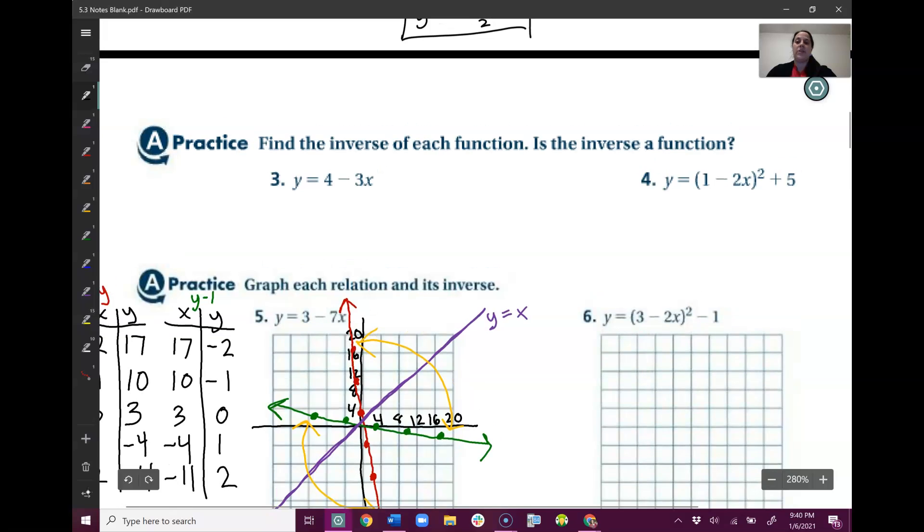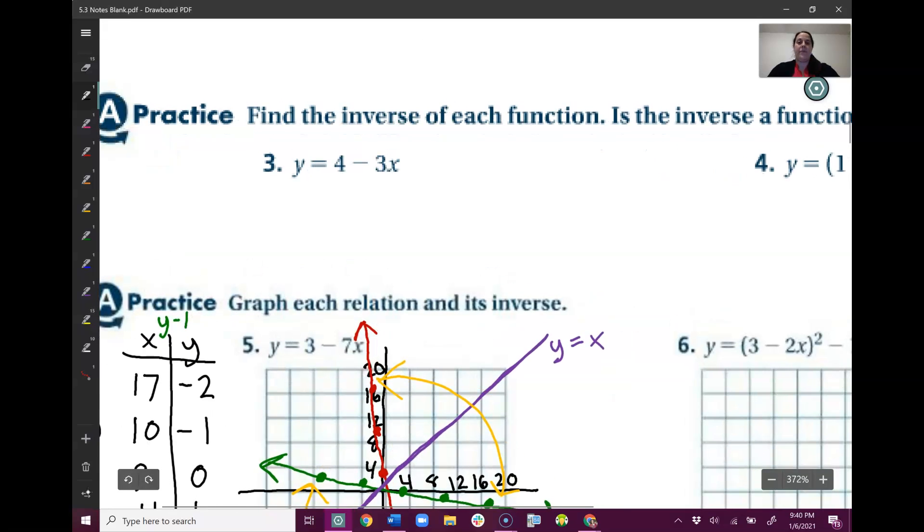So let's turn to the next page and try number 3. Once again, first step, flip the x's and the y's. And now I need to solve for y. Remember, work farthest away and then get closer. So this 4 is very farthest away. So I'm going to get rid of it first by subtracting it because it's a positive 4.